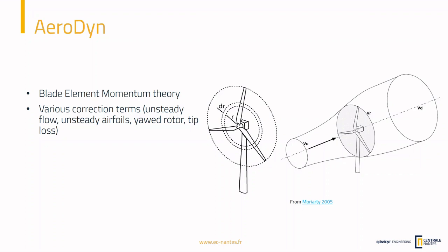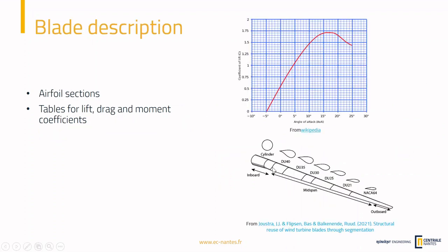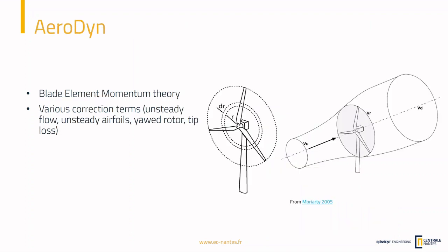AeroDyn works using the blade element momentum theory, which is a combination of two theories: the actuator disk theory and the blade element theory. The blade element theory says that you can split the blade into sections, compute the aerodynamic loads on each section, and then sum all of them. It's quite easy to compute the aerodynamic loads on one section if it's composed of the same airfoil, because you only need to look at the airfoil tables with lift, drag, and moment coefficients. To do that you only need to know the speed on the blade at that location — which means knowing the incoming wind speed and the blade speed. Thanks to ElastoDyn we already know the rotor speed, so the last thing we need is the incoming wind speed.